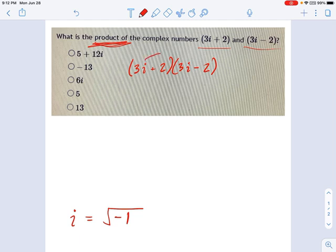So remember, first you multiply the first term times the first term of each. This becomes 3i times 3i. Well, that's 9i squared.